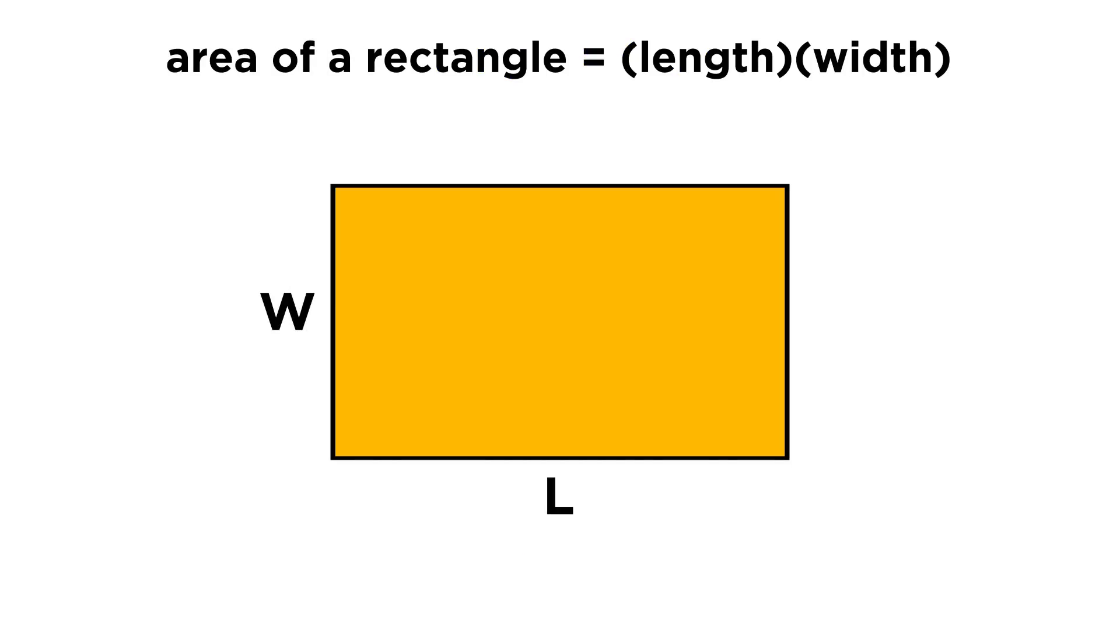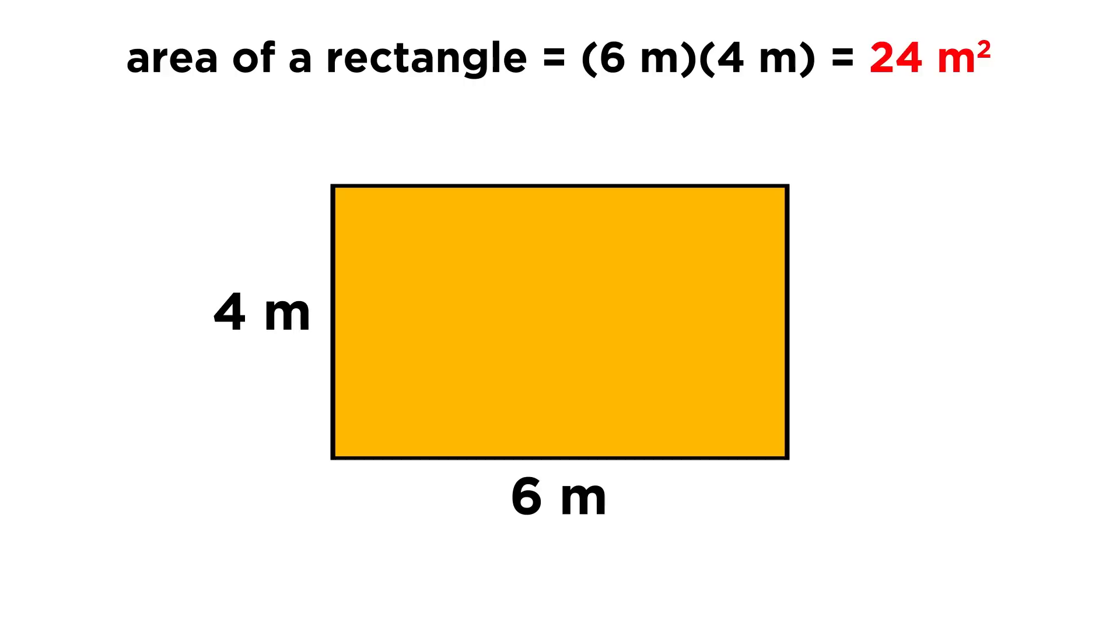If we are looking at some other rectangle that is not a square, the area will be length times width, which will be different numbers. Here is a rectangle that is four meters by six meters, so the area is twenty-four meters squared.